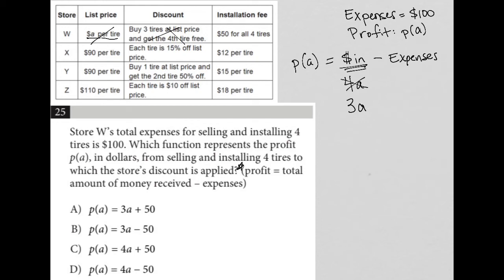The installation fee is $50 for all four tires, so they're also going to get in 50 bucks. A person comes in, they're going to pay three times A dollars for three tires, get one tire free to make it four tires, but then they're also going to pay $50 to install all four tires. That's the money in.